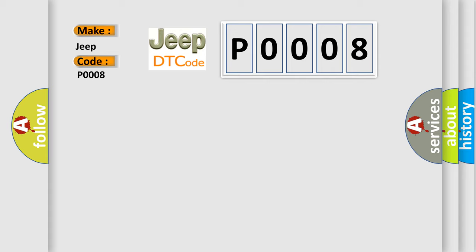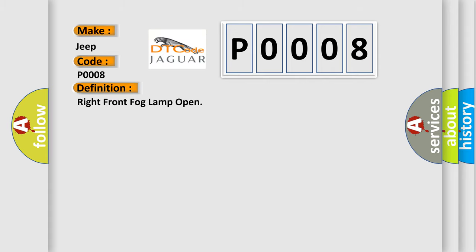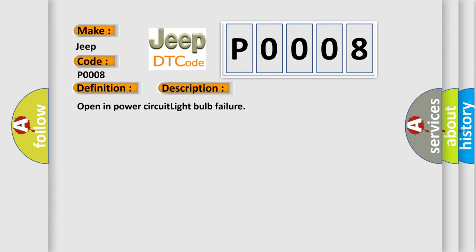The basic definition is: Right front fog lamp open. And now this is a short description of this DTC code: Open in power circuit light bulb failure.